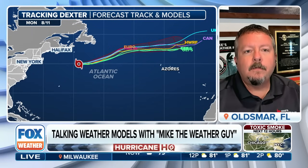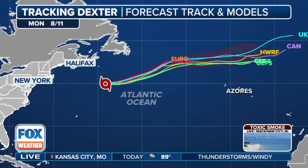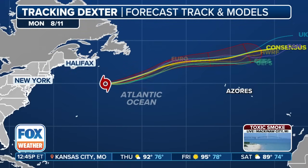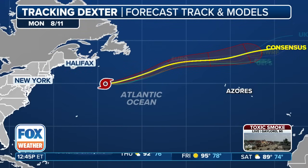We're looking at a batch of spaghetti models for Dexter right now — all these computer models and what each one thinks. Each one of those lines is an individual computer model's output for where it thinks the storm is going to end up. When you have a bunch of clustering like we have right now with Dexter, we're pretty sure it's going to go in that direction. But when they're all over the place, that's when it gets interesting. I always refer to them like a bunch of brains — when they start to agree, you know you've got something to believe in.